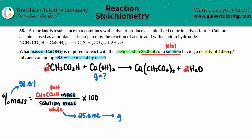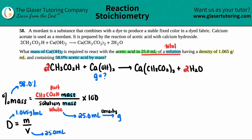To go from volume to mass you use density: d = m/v. They gave us the density as 1.065 g/mL and we have 25 mL of solution, so I have d and V and can solve for mass. Rearranging: mass equals density times volume.